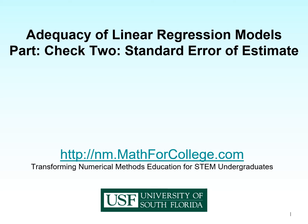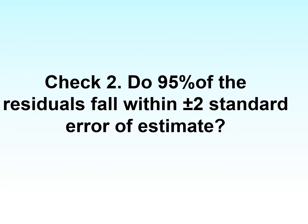We'll talk about check number two of finding out whether a particular linear regression model is adequate. This is based on something called the standard error estimate, and we'll look into the definition of the standard error estimate in this video itself, so you do not need to have already known what it is. The actual check is that 95% of the residuals — the difference between the observed value and the predicted value — have to fall between plus or minus two of the standard error estimate.